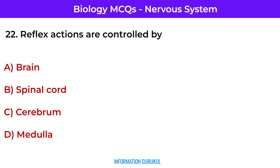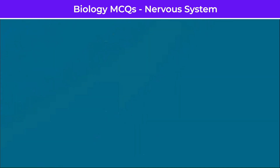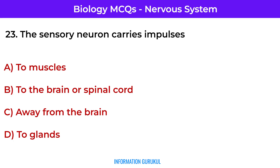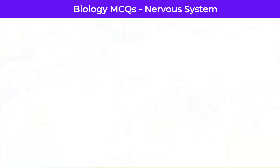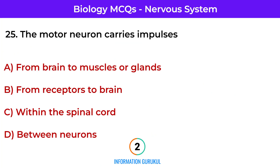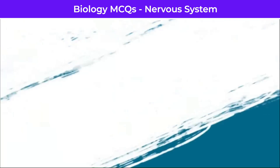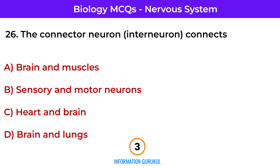Reflex actions are controlled by the spinal cord. The sensory neuron carries impulses to the brain or spinal cord. The speed of a nerve impulse is about 100 meters per second. The motor neuron carries impulses from the brain to muscles or glands. The connector neuron connects sensory and motor neurons.